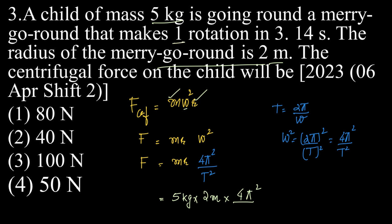What is T? Makes one rotation in 3.14 seconds, which means the time period is equal to 3.14 seconds, which is the value of π. And therefore, we can write this as T² can be replaced as π². So if T is equal to 3.14 seconds, which means T is equal to π, which means T² is equal to π².